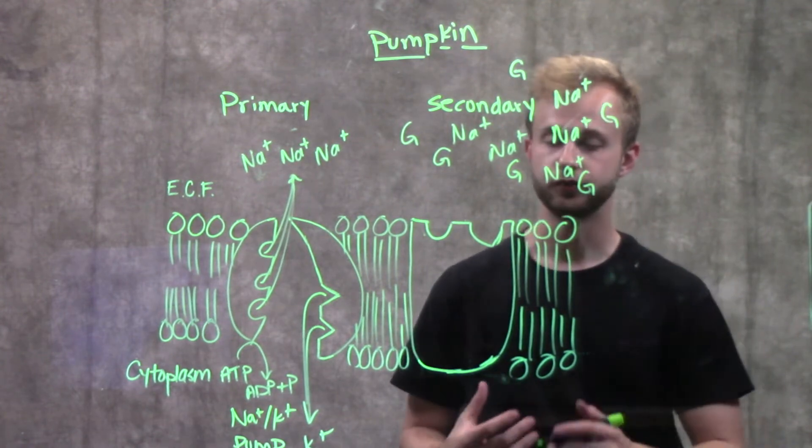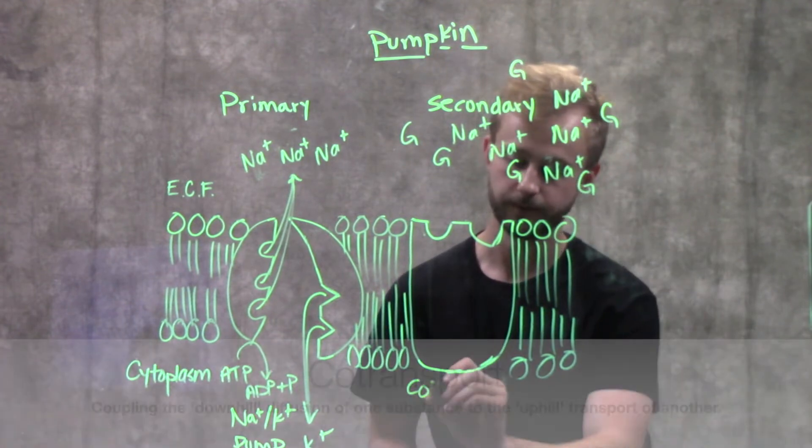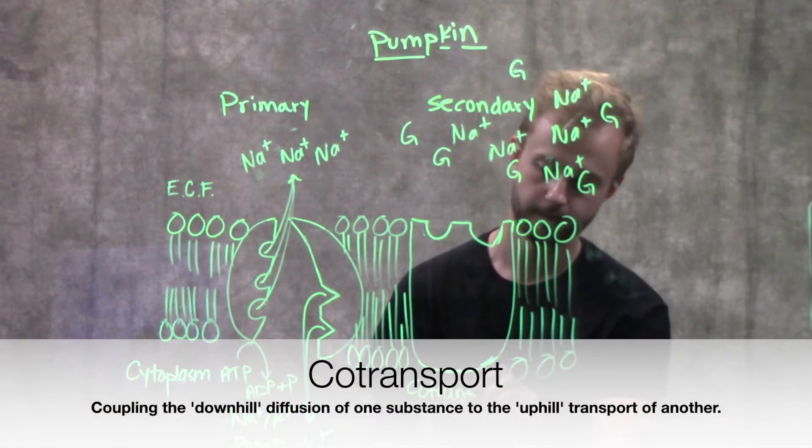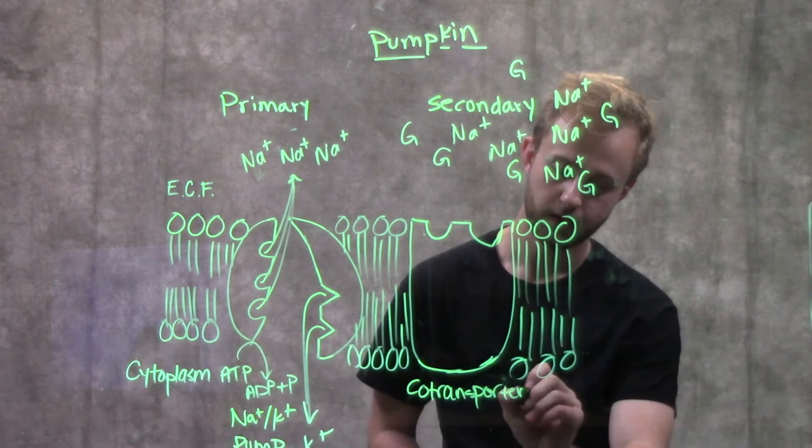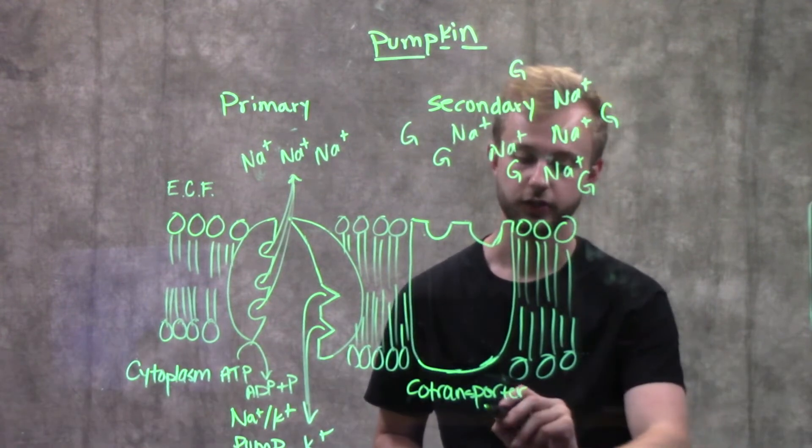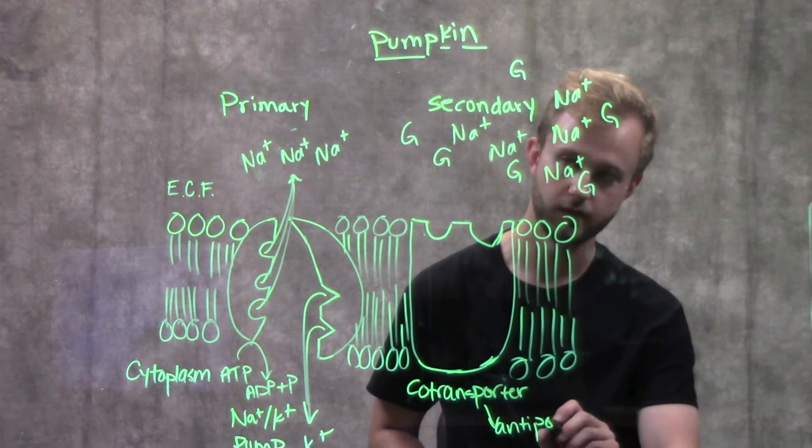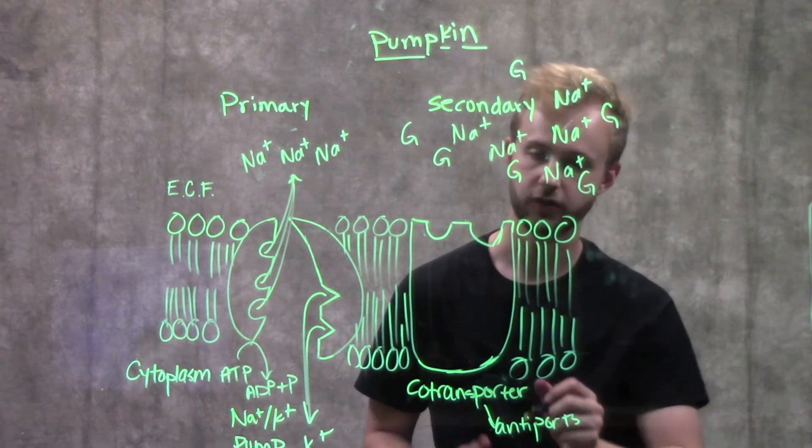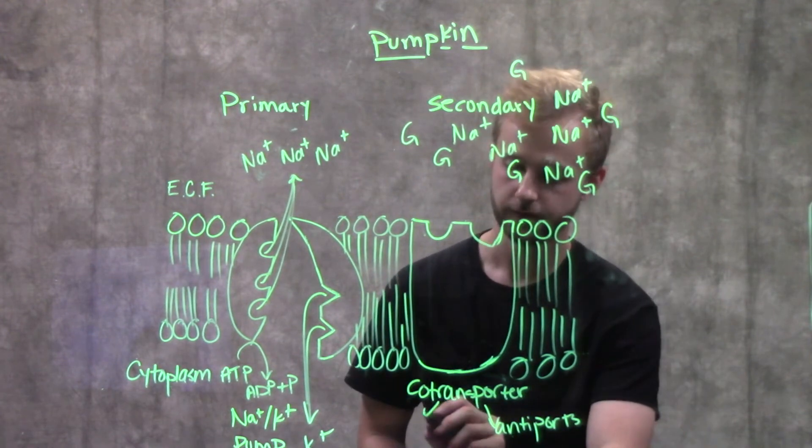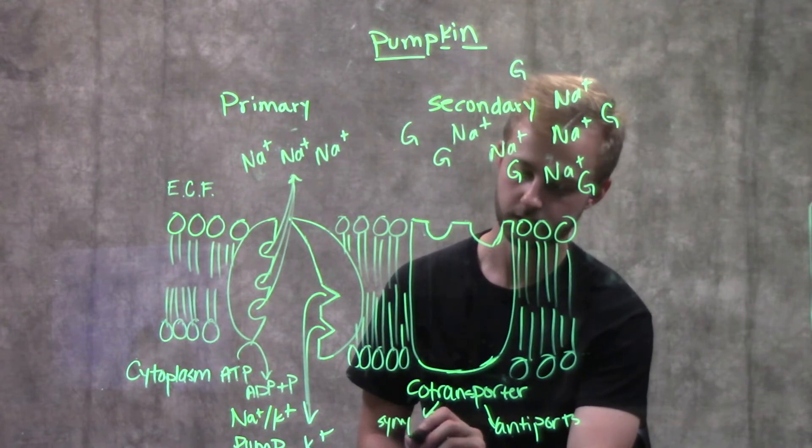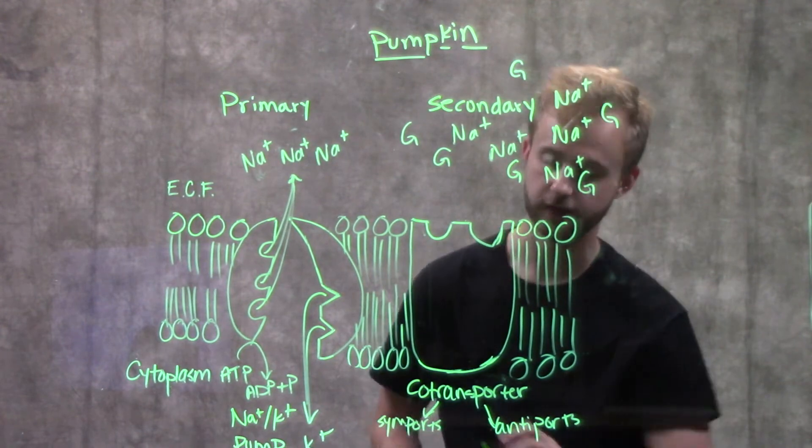And so how we do that is through something called a co-transporter. And there's two kinds of co-transporters. You can have anti-ports if things are moving in opposite directions, or you can have sim-ports if things move in the same direction.